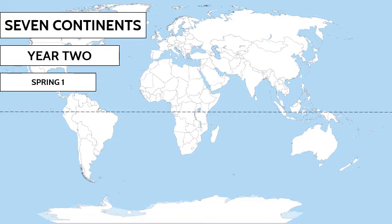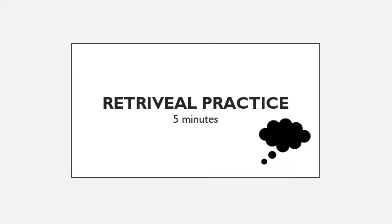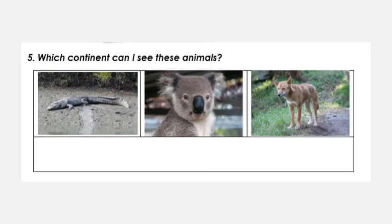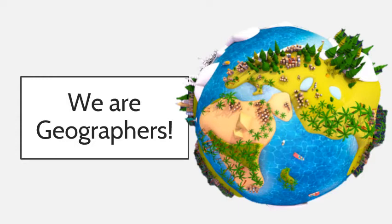Hi everybody and welcome to our geography lesson number four — this is our third lesson in geography. We're going to do our retrieval practice first. In this part we're going to be geographers, and a geographer is a type of scientist who studies the earth, land, and people.